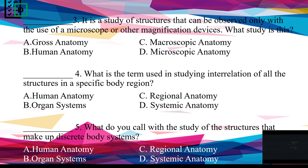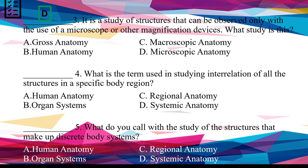If your answer is D, you're correct. Number 4: What is the term used in studying interrelation of all the structures in a specific body region? A. Human anatomy. B. Organ systems. C. Regional anatomy. D. Systemic anatomy.